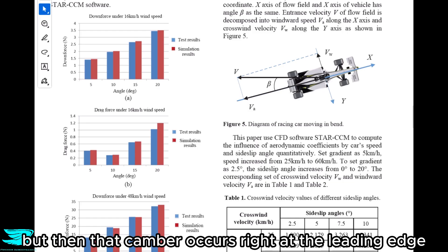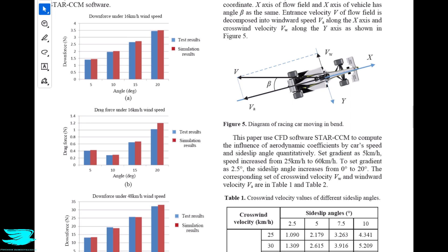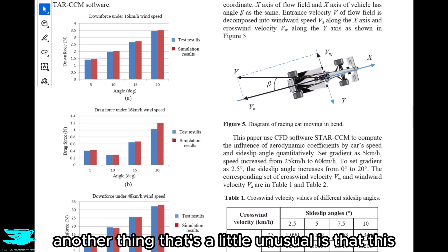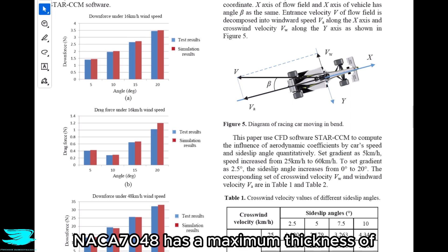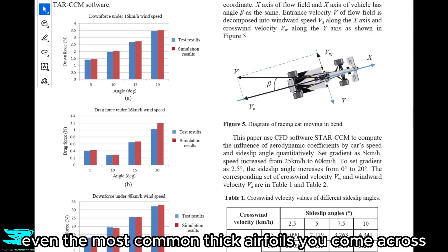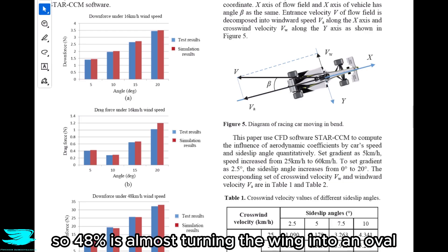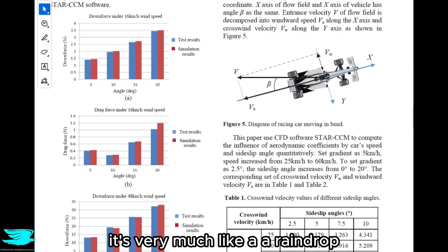But then that camber occurs right at the leading edge, which I don't quite understand. I don't get how the maximum camber can occur right at the leading edge. Another thing that's unusual is that this NACA 7048 has a maximum thickness of 48% of the chord. That's really thick. Even the most common thick airfoils you come across, like wind turbine blades, are more around 30%. So 48% is almost turning the wing into an oval. It's very much like an idealized raindrop shape.